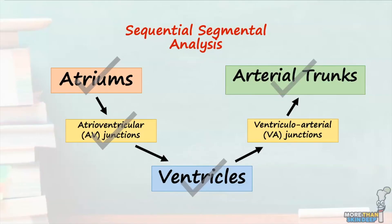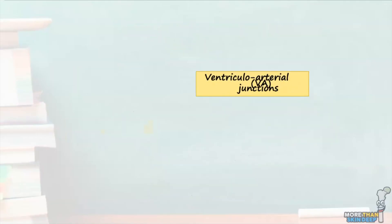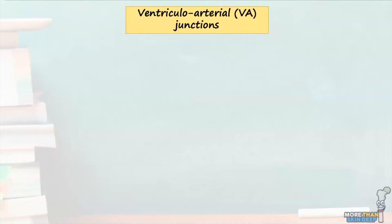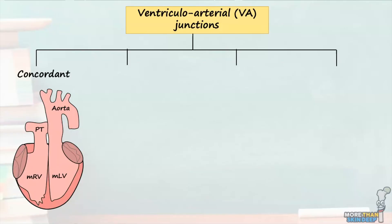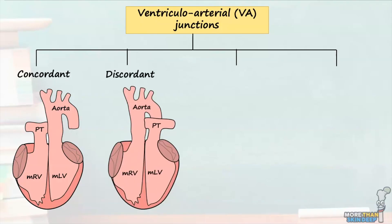This leads on nicely to the final component of sequential segmental analysis, which is the ventricular arterial junctions. The ventricular arterial, or VA, junctions are defined as the connection between the ventricles and the arterial trunks, and typically support the aortic and pulmonary valves. There are four types of ventricular arterial junctions to be aware of. The first are concordant VA junctions, where the left ventricle gives rise to the aorta and the right ventricle gives rise to the pulmonary trunk — this represents the normal pattern. The second category are discordant VA junctions, where the morphologically left ventricle gives rise to the pulmonary trunk and the right ventricle gives rise to the aorta.